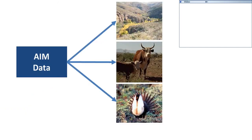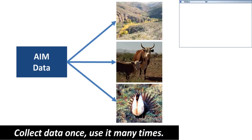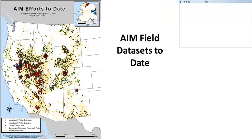To summarize: the whole idea and impetus is to have one core dataset across BLM lands — and potentially beyond — and collect that information once but use it many times for the many different purposes, uses, and benefits we need to provide information about.